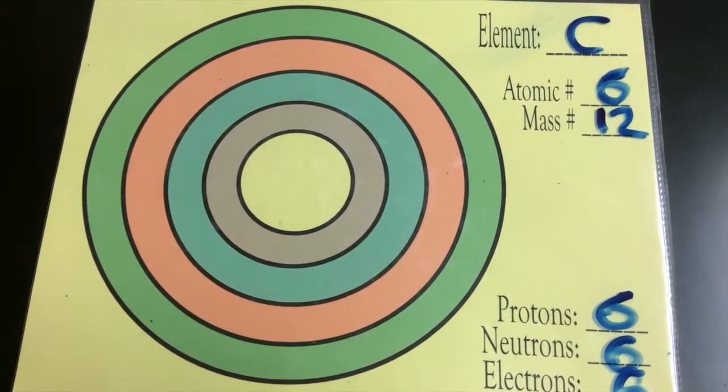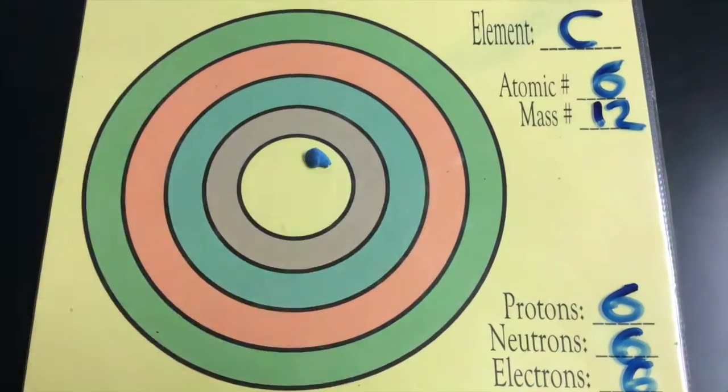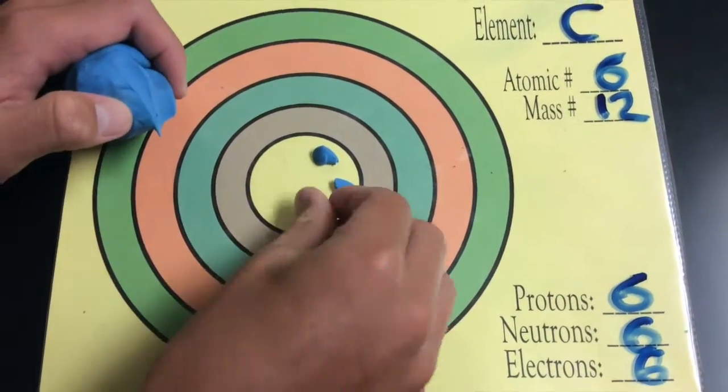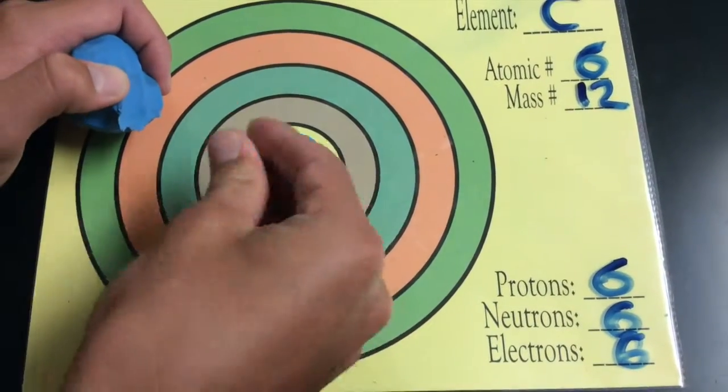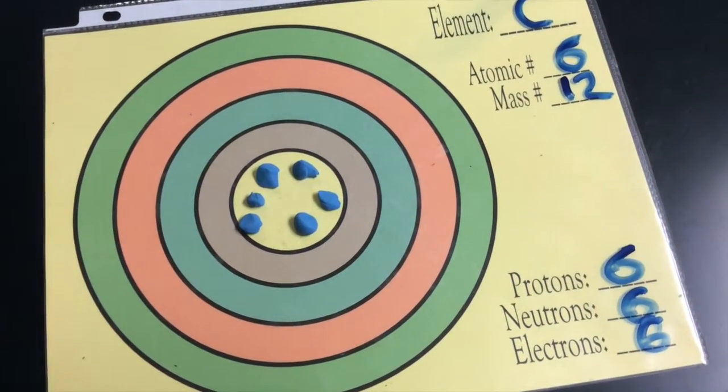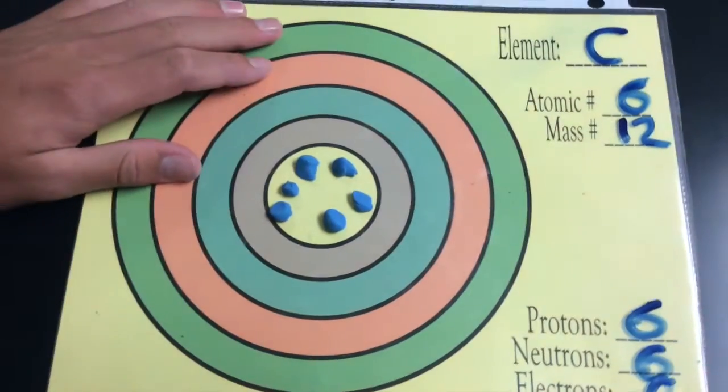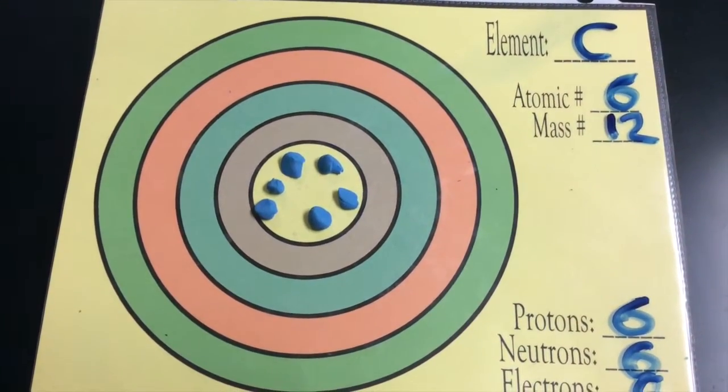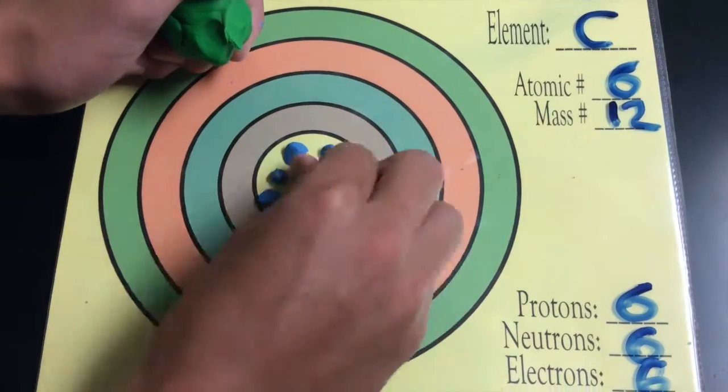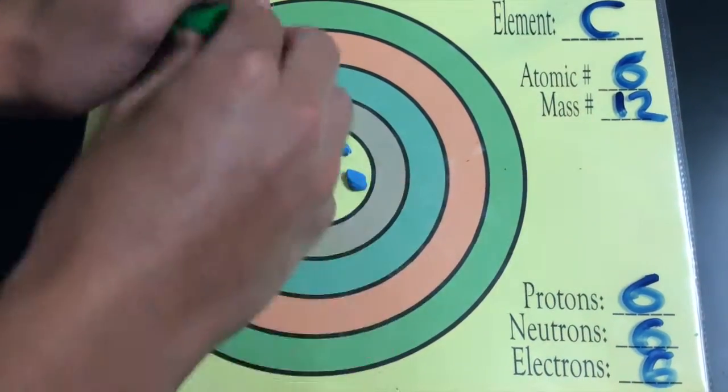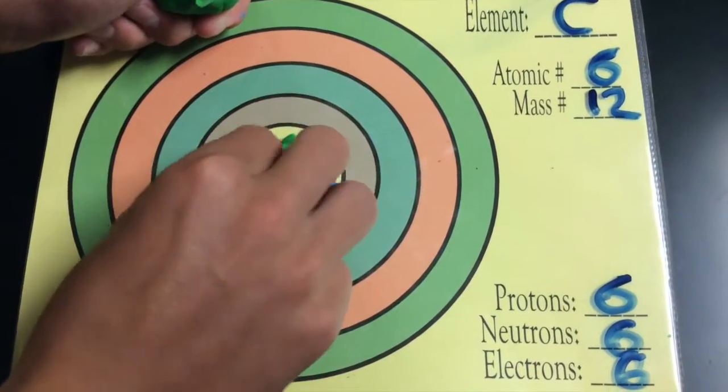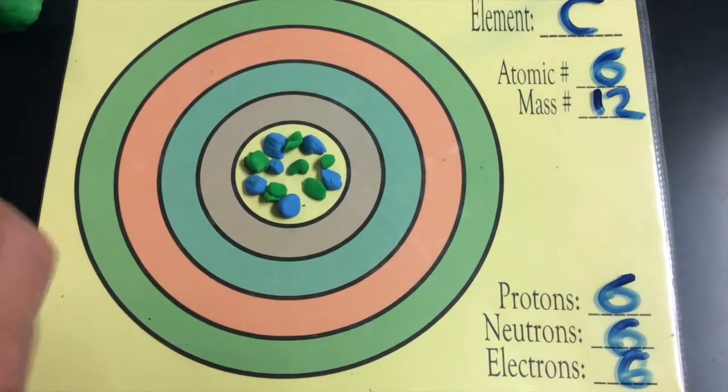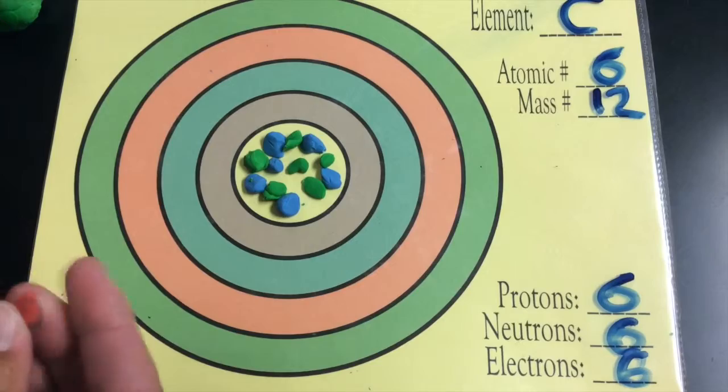Let's make the protons blue. Let's make the neutrons green. And we'll do the electrons in red.